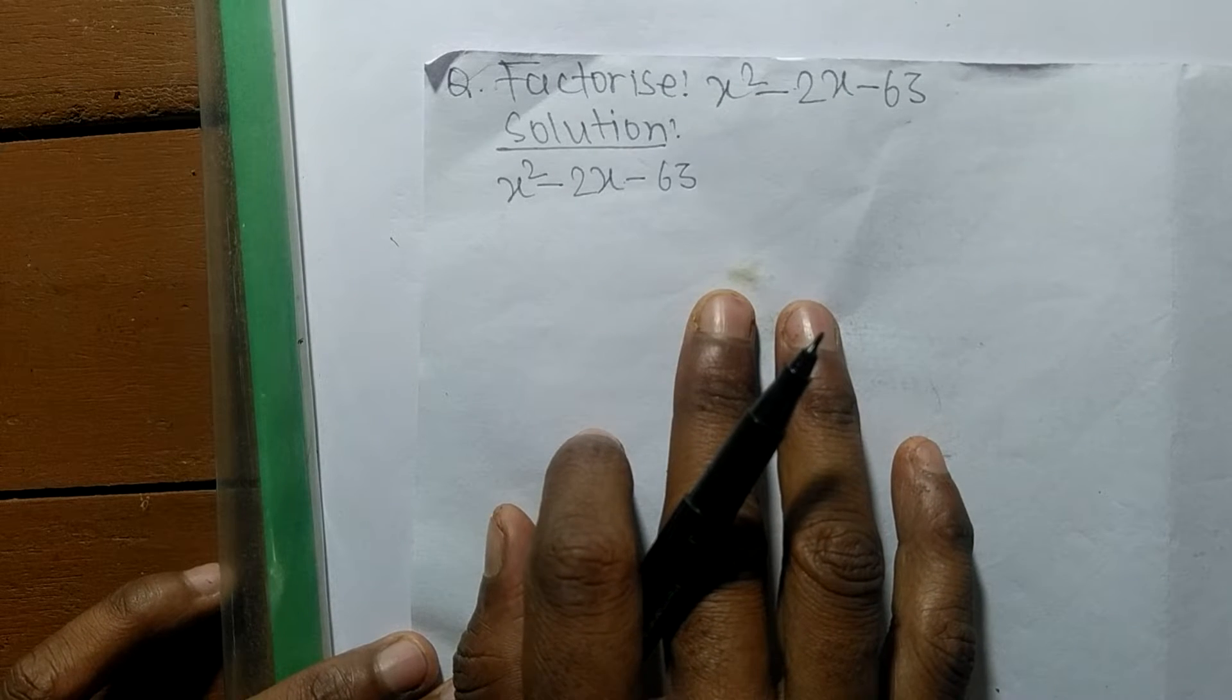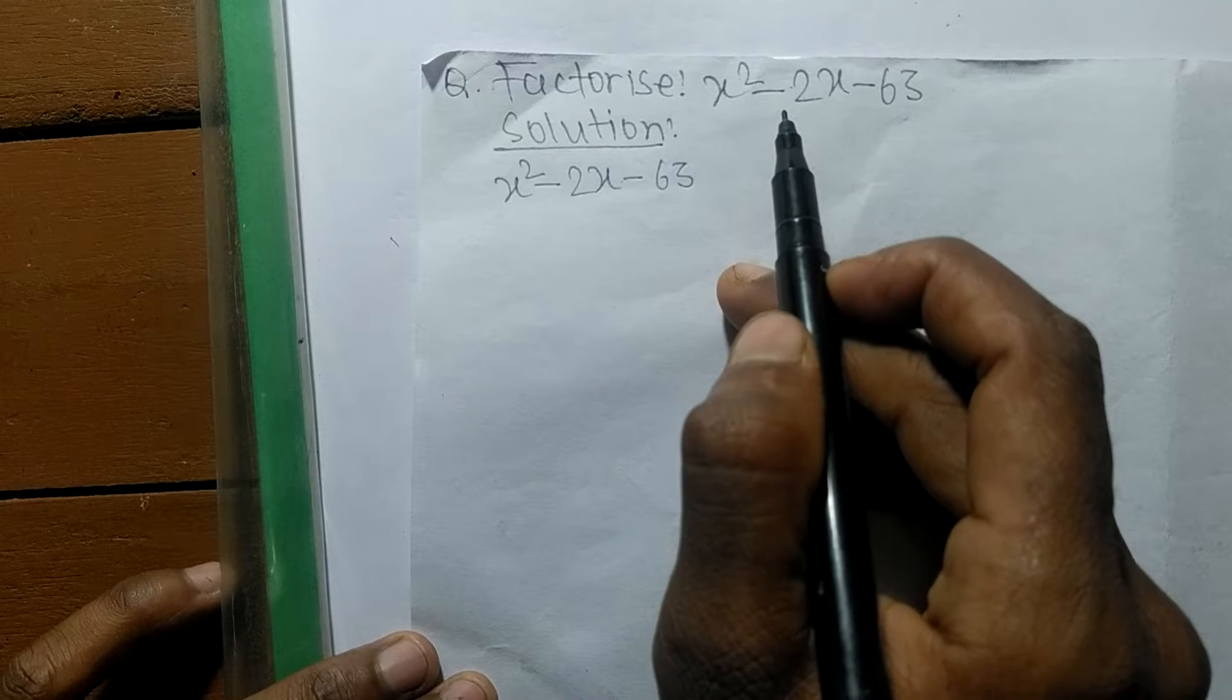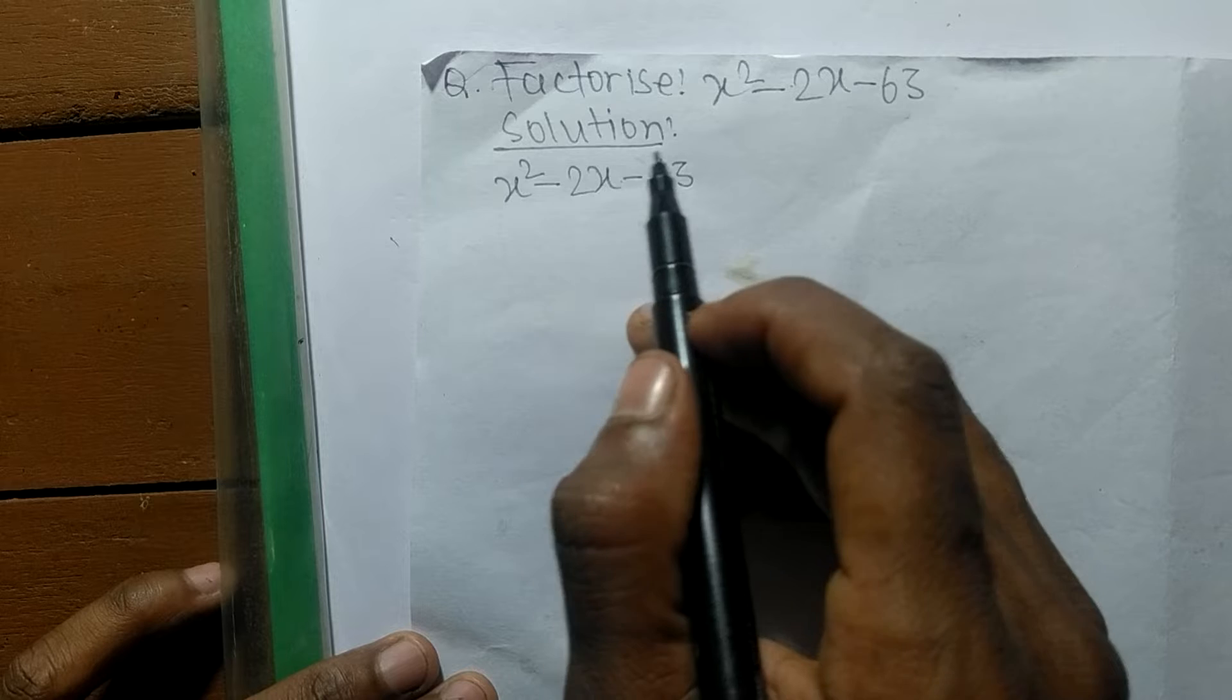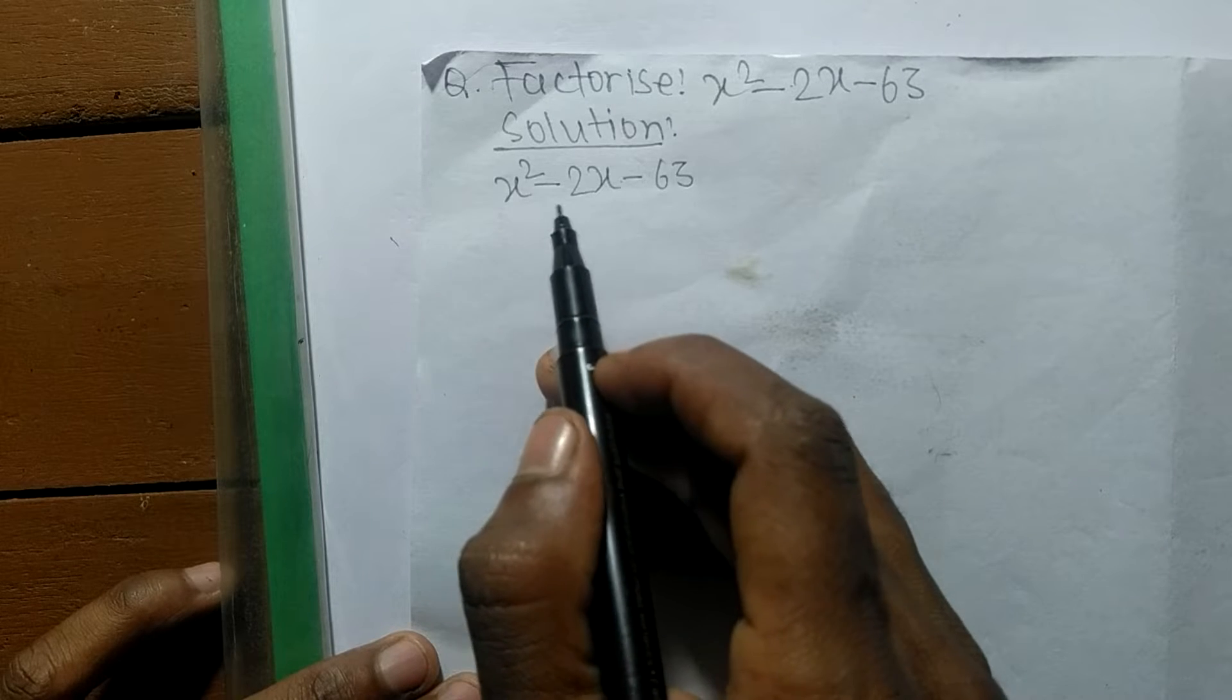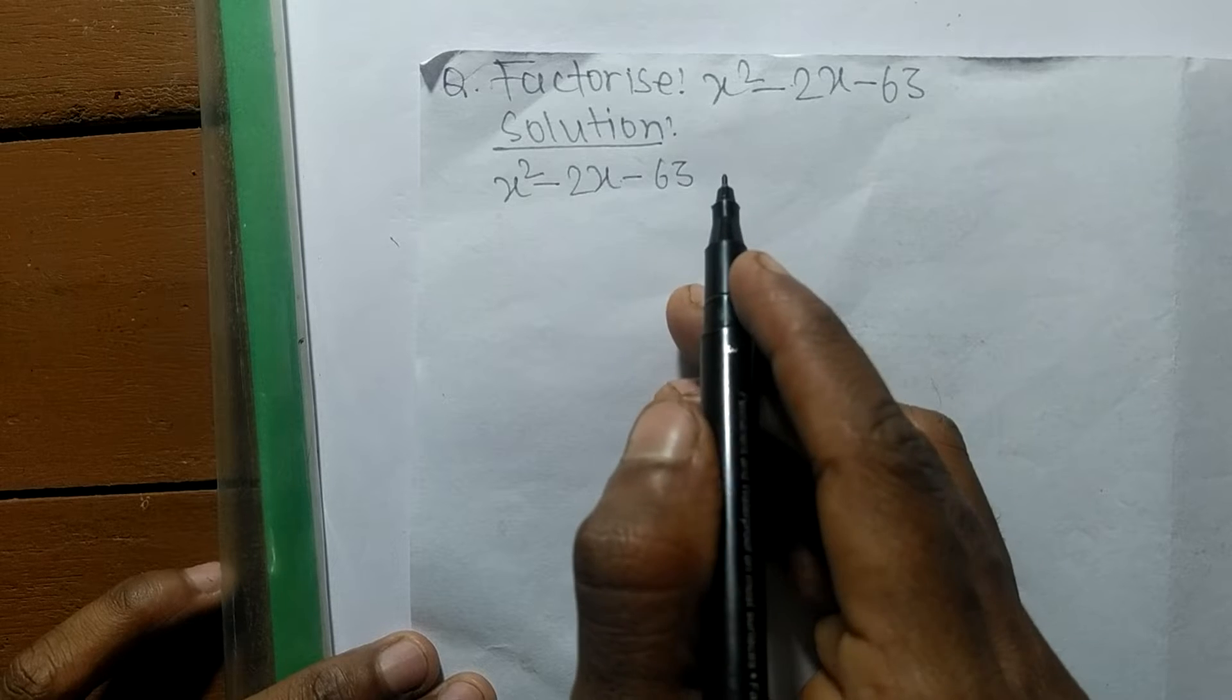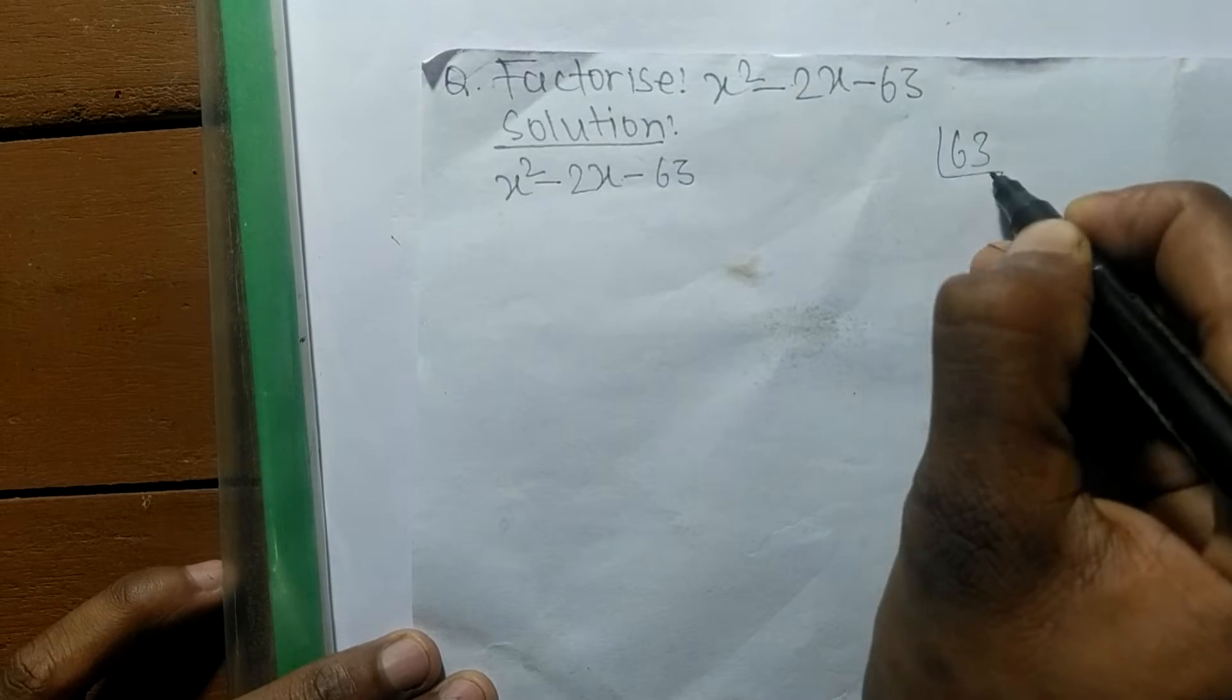So today in this video we shall learn to factorize x square minus 2x minus 63. For the solution of x square minus 2x minus 63, first we have to find out the factors of 63.